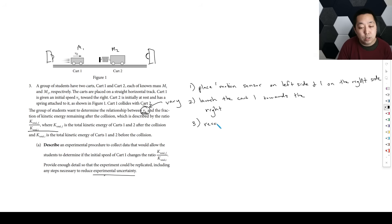Launch cart one towards the right. Record the initial velocity of cart one, and then after the collision record the velocity of cart two, cart one and cart two. That will be one trial. We want to vary something, so we're going to repeat the steps with five different initial velocities because we want to see how changing that V0 is going to affect the total kinetic energy ratio.